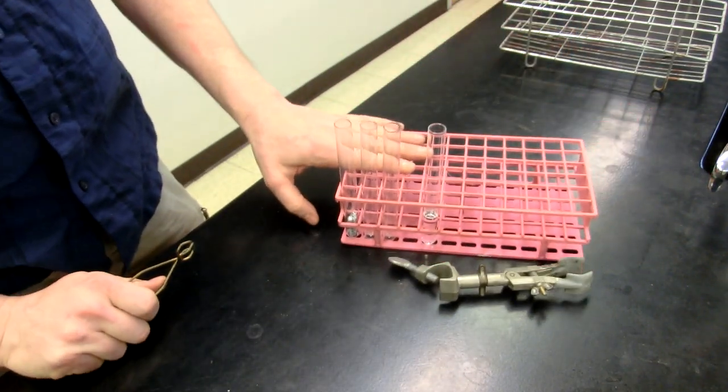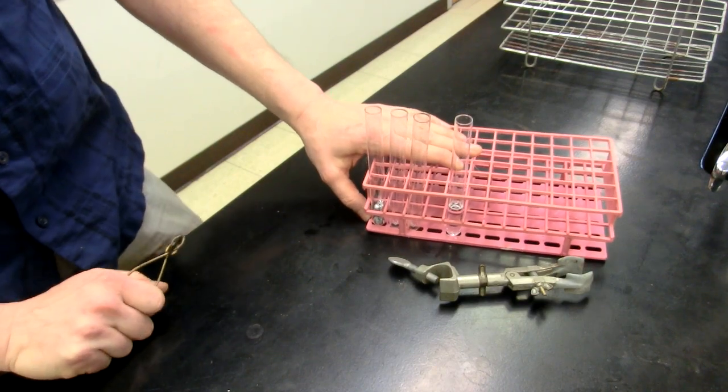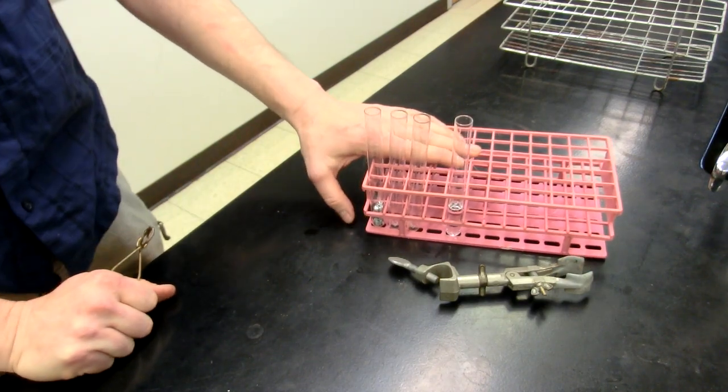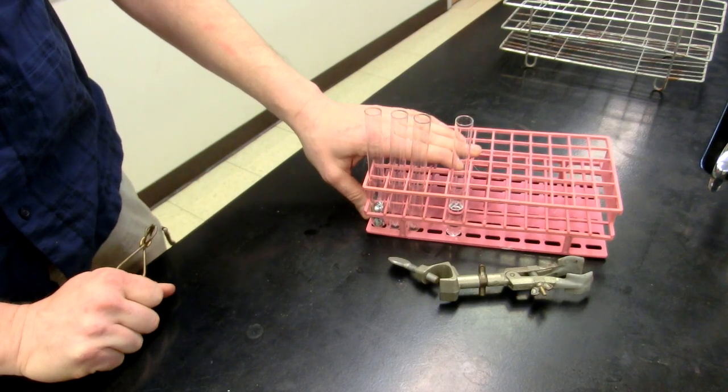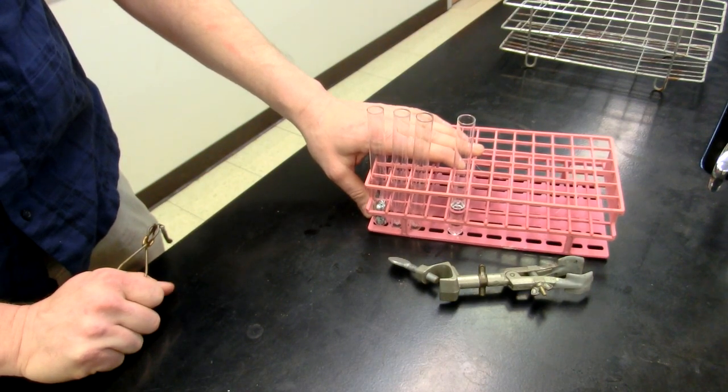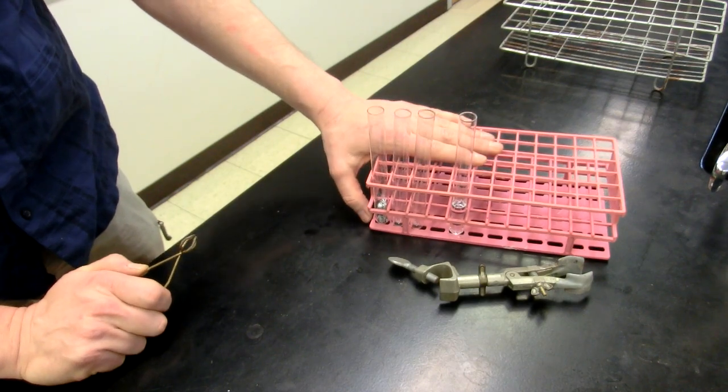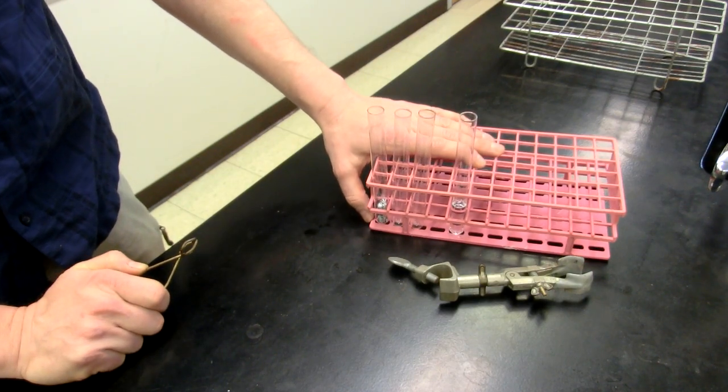This is called a test tube rack. You'll notice that I have a plastic rack. The plastic racks are actually better than the metal ones because the plastic in general is going to be less chemically reactive than the metal is going to be. So if you have the opportunity to use a plastic test tube rack, I would go with it instead.